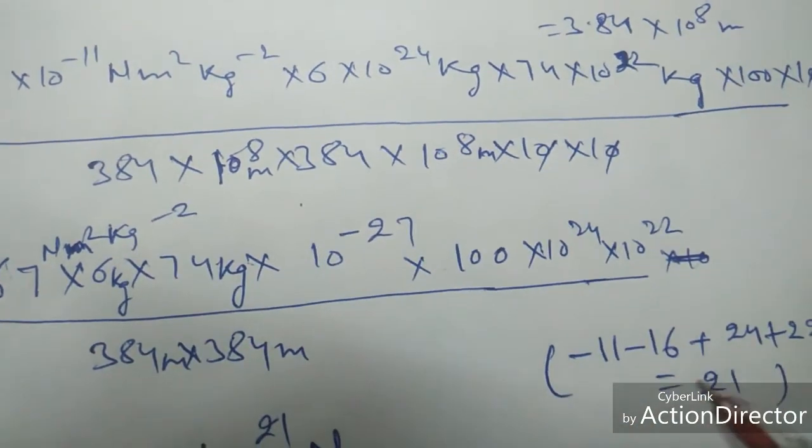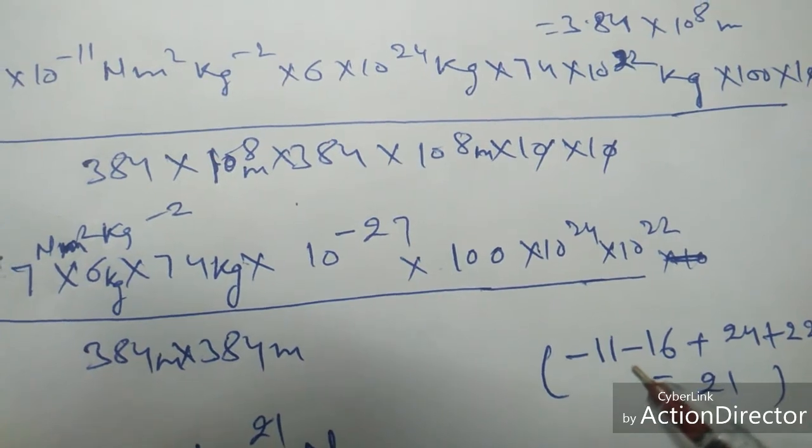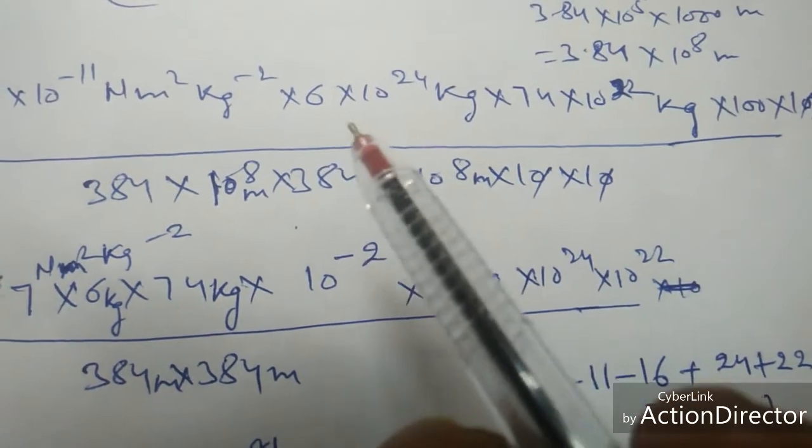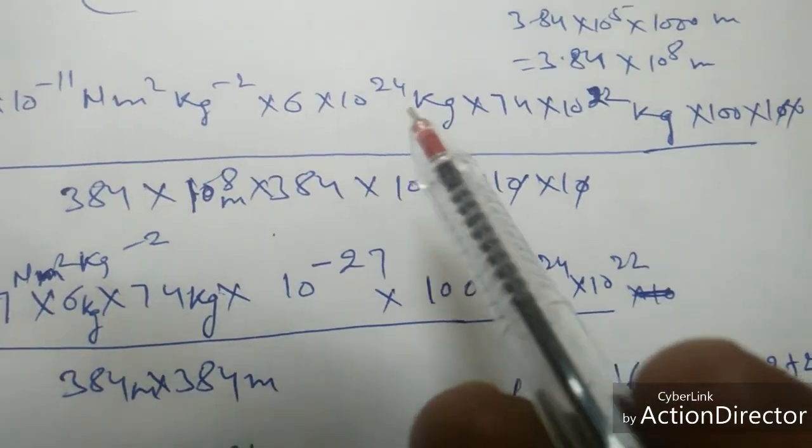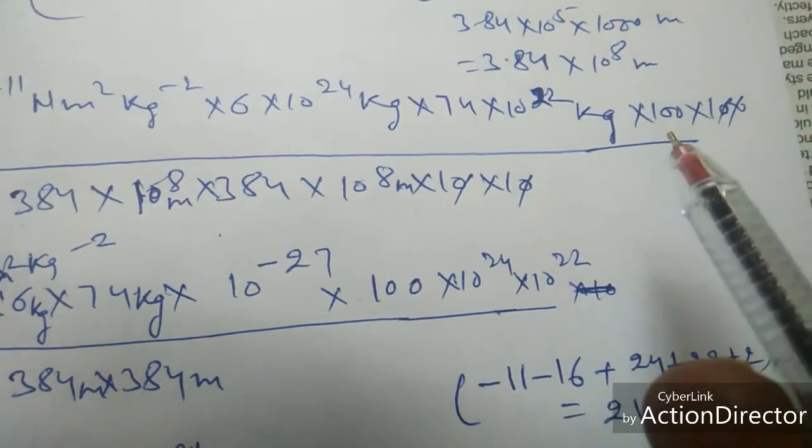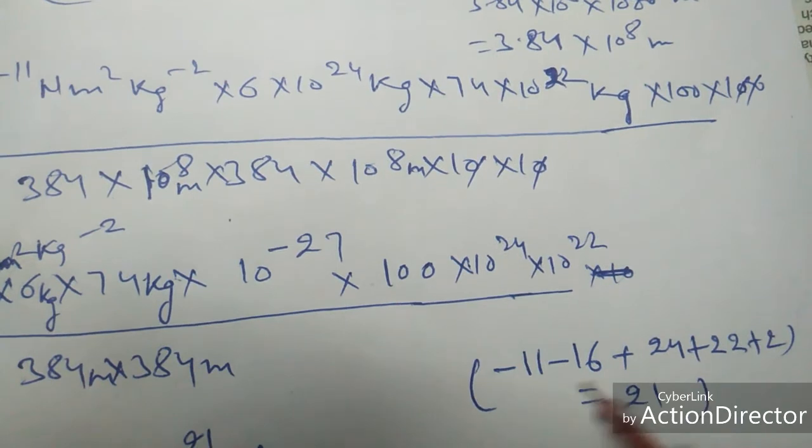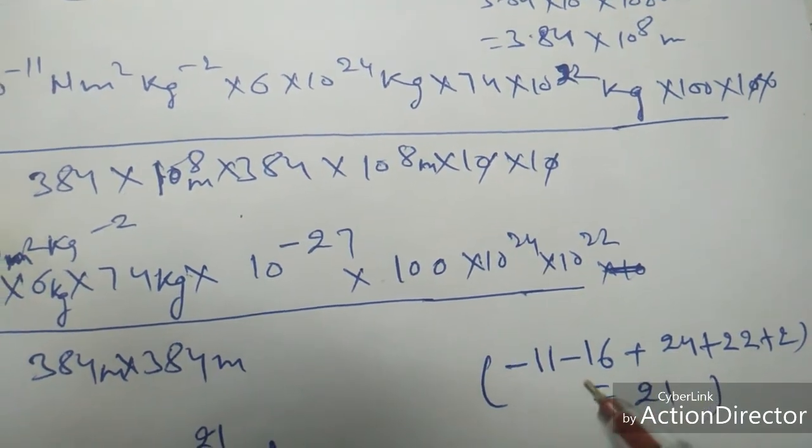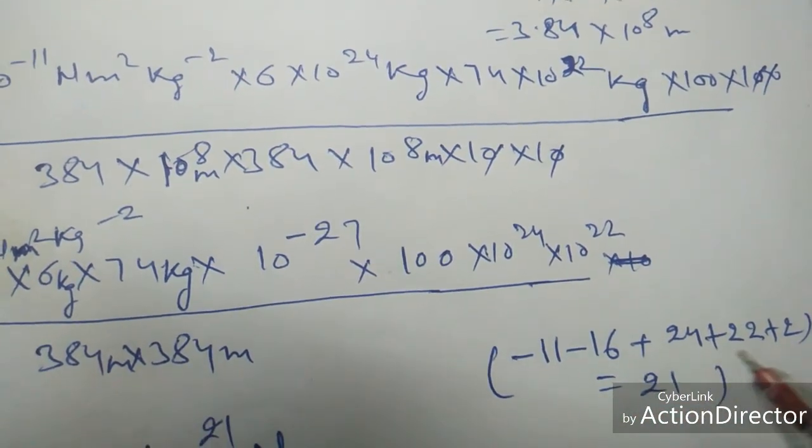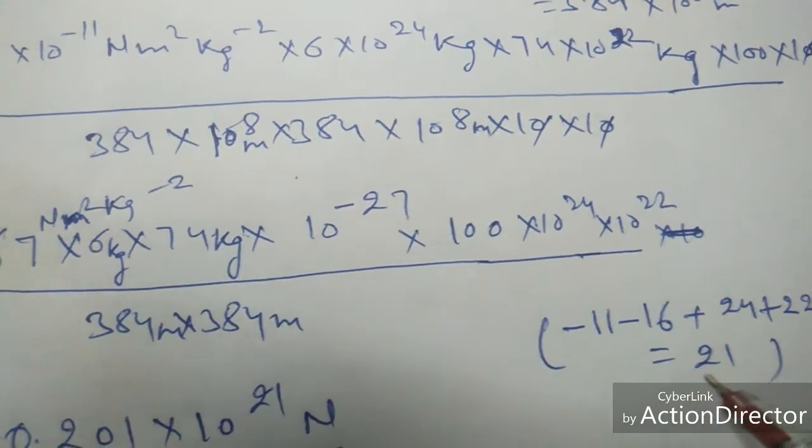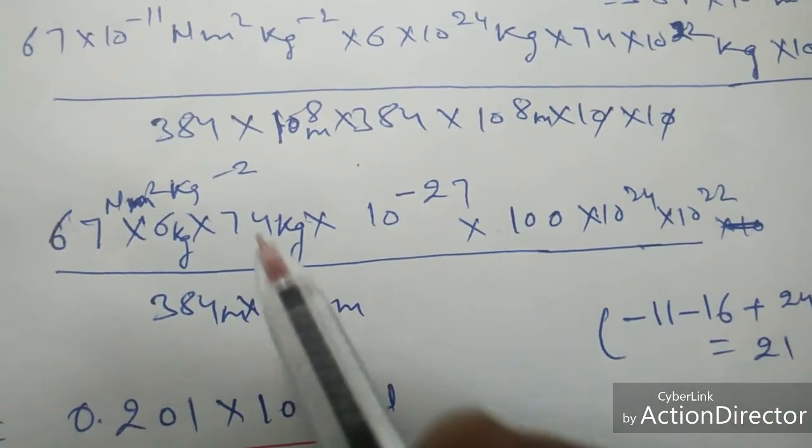So -11, -16, they are in minus. On the above, 24 zeros, 22 zeros, and 100 plus two zeros. So after calculating all the zeros, that is -27 plus 48, it will come out to be 21 zeros. So after multiplying and dividing,